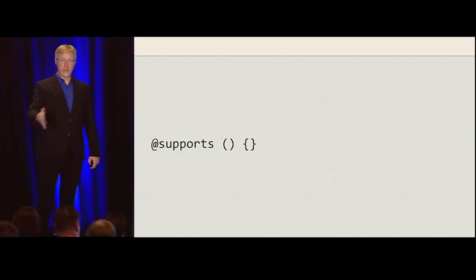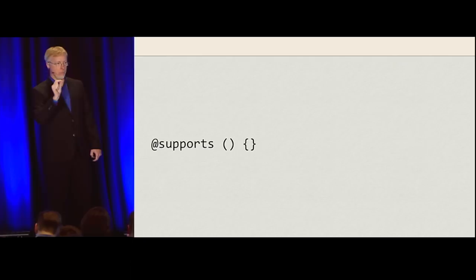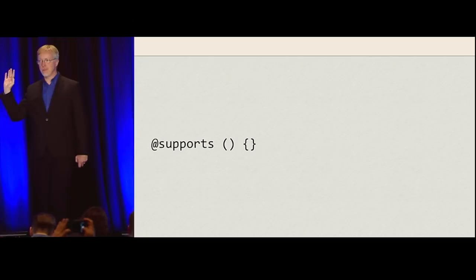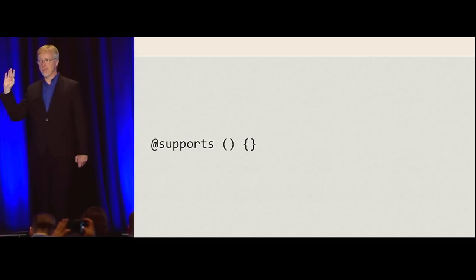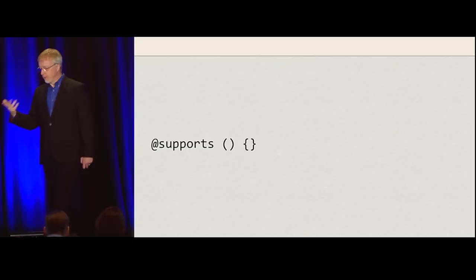So we moved to feature testing in DOM scripting, where instead of checking the user agent string, you'd ask: if you support this DOM method, here's code that uses that DOM method. We don't care what browser you are — it could be a browser that didn't even exist when we wrote the code. That was feature detection, or feature sniffing, instead of browser sniffing.